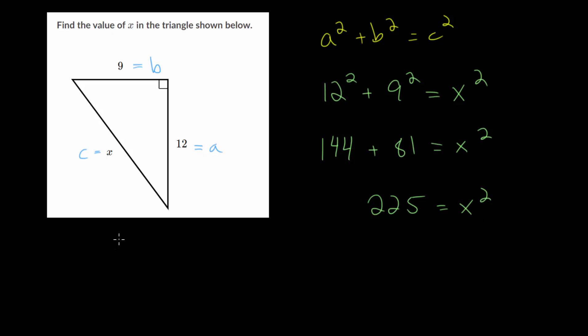So what number multiplied by itself gives us 225? So we're taking a square root of each side to cancel out the square. And we know that the square root of 225 is 15, since 15 times 15 does give us 225.